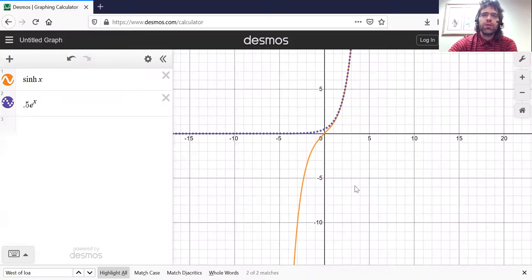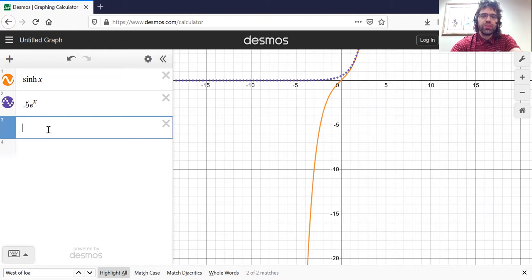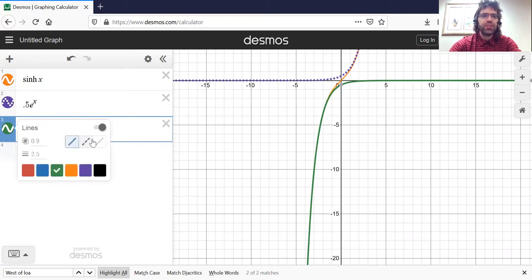What about as x gets large in the negative direction? This is also exponential: negative 0.5 e to the negative x.